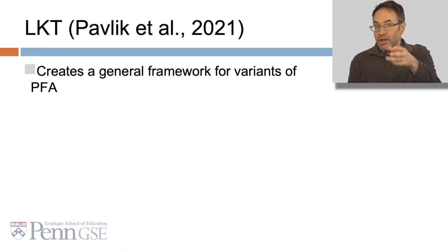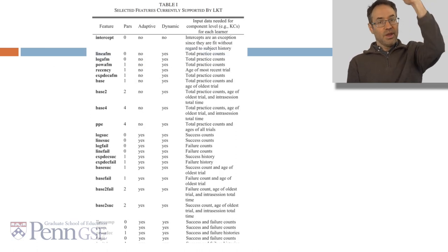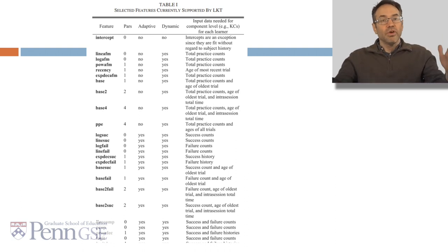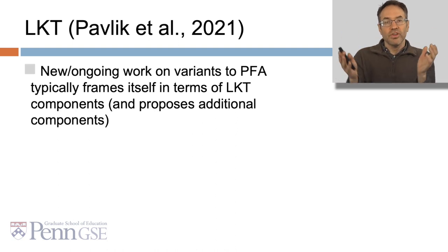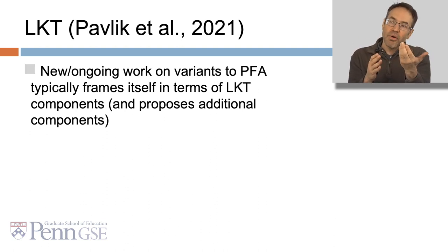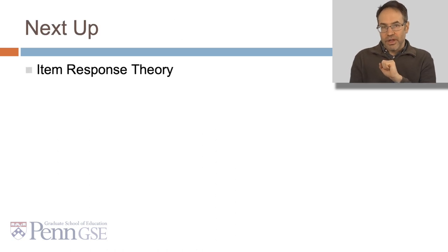Building on this and some other work, Phil Pavlik and his colleagues created a general framework for variants of PFA. The biggest contribution that LKT probably made was that new and ongoing work on variants of PFA now typically frame themselves in terms of LKT components and propose additional components. Instead of every single little tweak to PFA becoming a new named algorithm, now we can just say LKT components 8 and 10. Work continues on PFA. Next up, we're going to discuss item response theory, a classic approach with some limitations that BKT and PFA don't have.